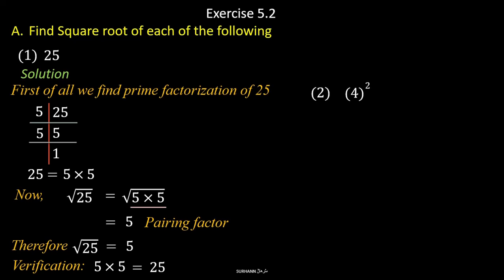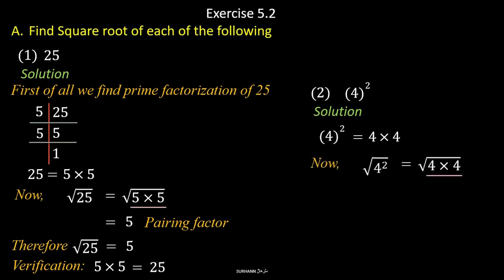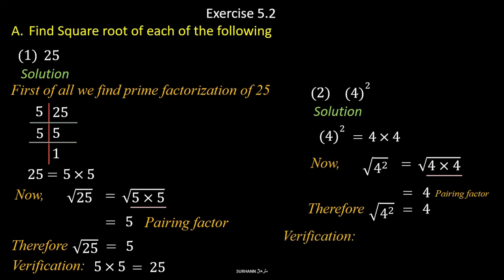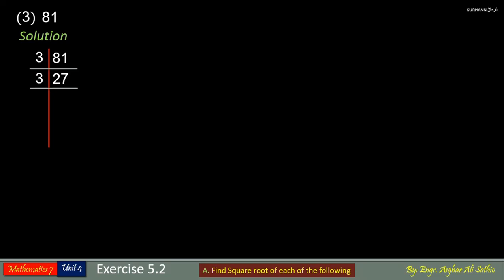Now let us see problem 2: 4 to the power 2. You already know that 4 to the power 2 means 4 is multiplying itself 2 times. So here we already have one pair of 4. We pick one number from this pair, and the square root of 4 to the power 2 is 4. You can verify this — 4 squared equals 16. In the same way, try to solve all other problems of this exercise by yourself.